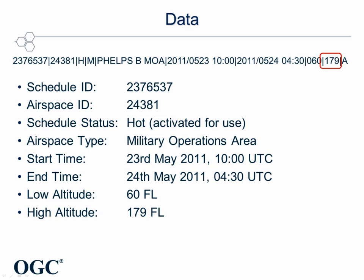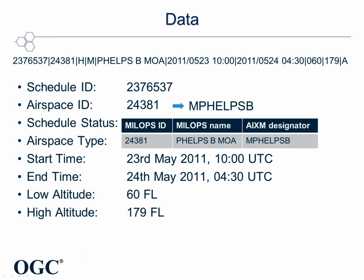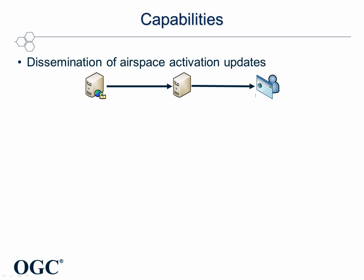In order to be transformed into an AIXM time slice, this data has to be enriched with the baseline data. For this purpose, the airspace ID has to be mapped to the AIXM designator, which can be used to access a web feature service. In the FAA-SAA dissemination pilot, the event service and the adapters are used for the dissemination of airspace activation updates. The updates are retrieved, enriched, filtered, and forwarded to interested clients.